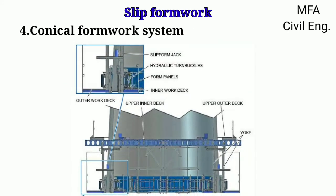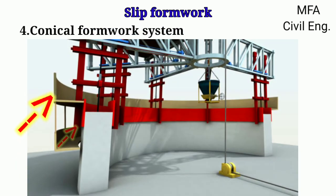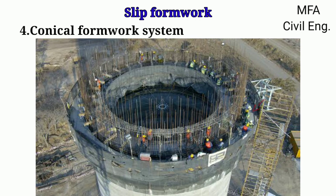Conical formwork is a system that makes it possible to construct structures with varying wall thickness and tapering walls. It is also possible to construct structures whose geometry changes from angular to circular. Conical formwork is made up of cantilever plates and overlapping plates fastened to a steel yoke frame. These plates automatically adjust the form geometry, and the system includes an integrated scaffolding system with horizontal walking platforms providing a safe walking area for laborers, engineers, and supervisors.